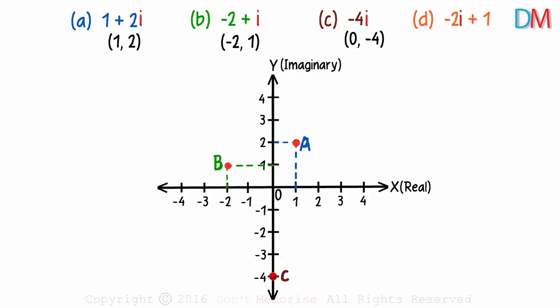And what about the last one? The ordered pair can be written as negative 2 comma 1 right? This is a very common mistake that students make when they are in a hurry.